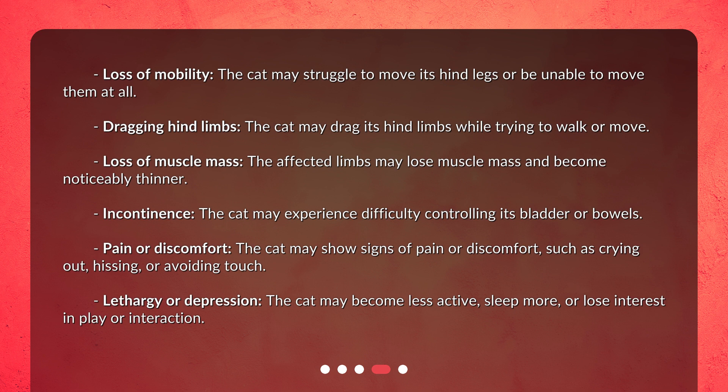4. Incontinence — the cat may experience difficulty controlling its bladder or bowels. 5. Pain or discomfort — the cat may show signs of pain or discomfort, such as crying out, hissing, or avoiding touch. 6. Lethargy or depression — the cat may become less active, sleep more, or lose interest in play or interaction.